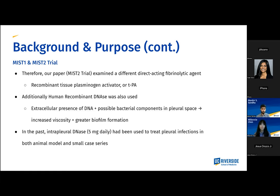Therefore, our paper today — otherwise known as the MIST-2 trial — examined a different direct-acting fibrolytic agent, TPA, or tissue plasminogen activator. Additionally, they wanted to try out DNase, or human recombinant DNase, because in pleural infections or pleural empyema there is extracellular presence of DNA and possible bacterial components in the pleural space, which can lead to increased viscosity and greater biofilm formation. They hypothesized that there could be some benefit for patients with pleural infection or pleural empyema from a combined therapy of TPA and DNase. In the past, intrapleural DNase had been used to treat pleural infections in both animal models and small case series.